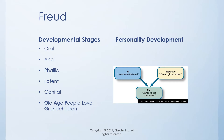The next stage is the phallic stage, also referred to as the early genital stage, where the child identifies with the same-sex parent. You may have heard of Freud's Oedipus complex or Electra complex — the male child favors the mother and the female child favors the father. Freud examined the triad of the mother, father, and child. The next stage is the latent stage.